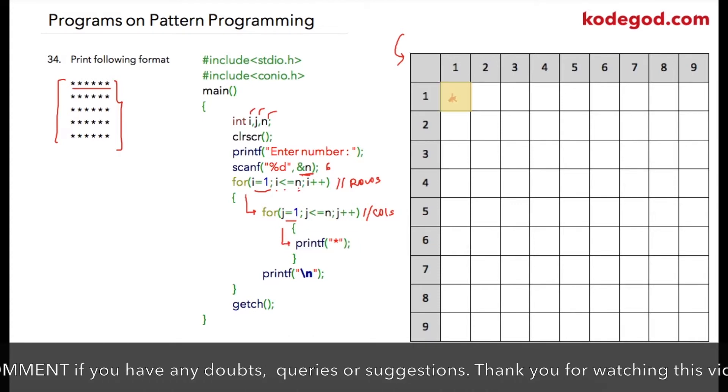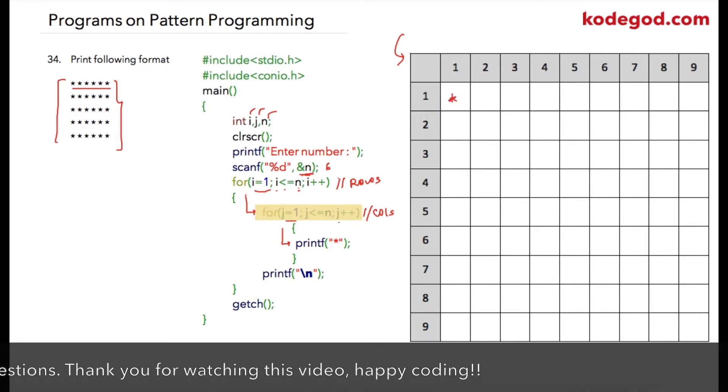Then j will be incremented to 2. Again the condition will be checked, and because 2 is less than or equal to 6, that is a true condition, a second star will be printed.